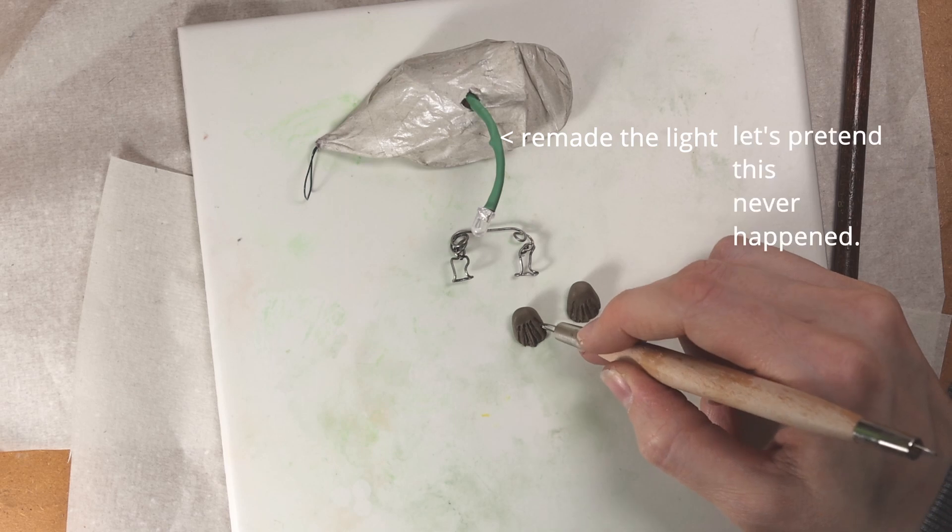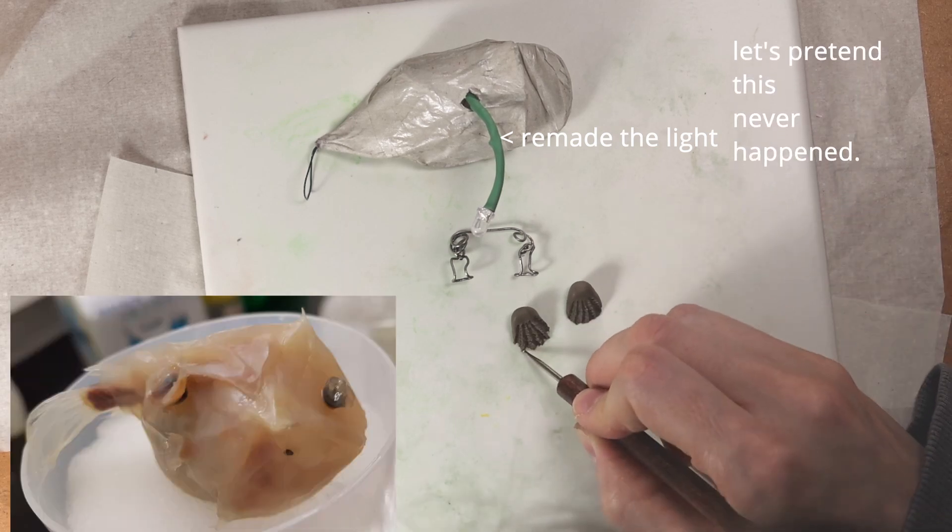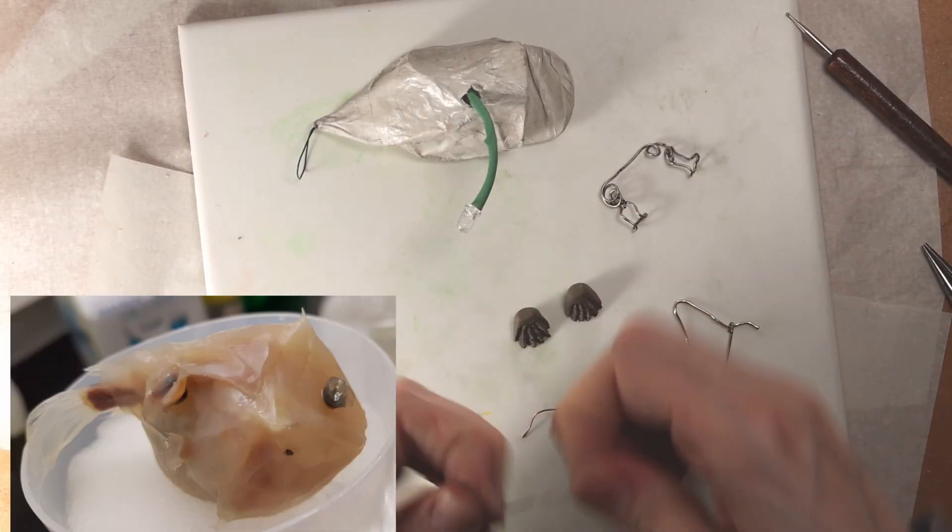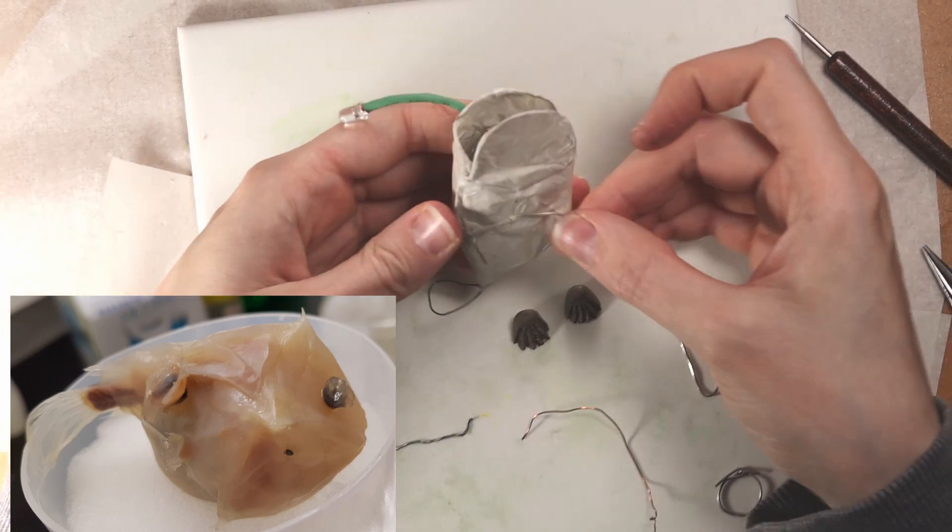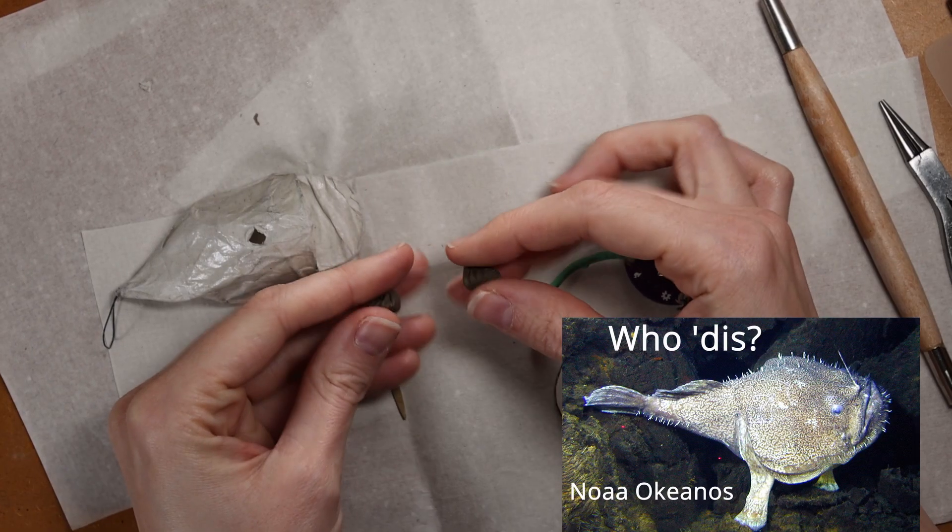Originally, I intended this puppet to swim, like this museum specimen would have. But I realized a moving light source would be a headache for rig removal. So plans changed.